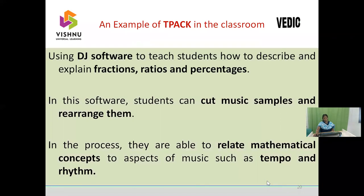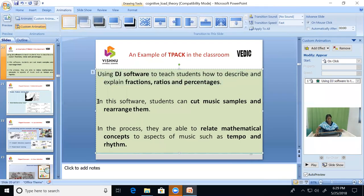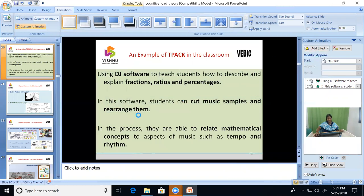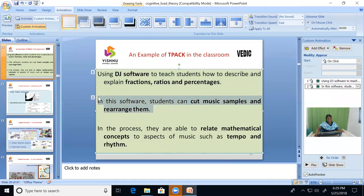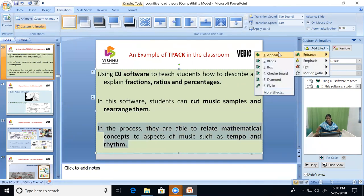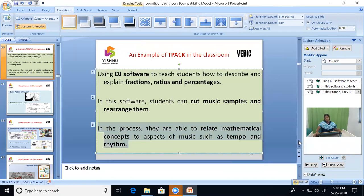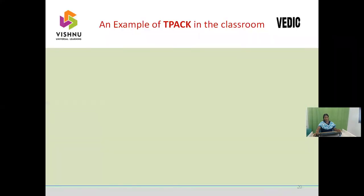Upon the click, the first point will come. Now choose the second point, again go to Add Effect, Entrance, Appear — this is the second point, upon the second click this point will be provided on demand. Choose the third point, go to Add Effect, Entrance, Appear. Now look at the slide — the title of the slide is available. You may introduce about the title for a while.